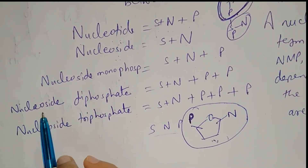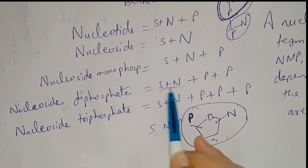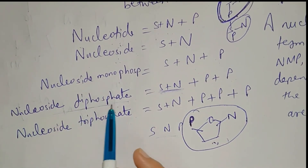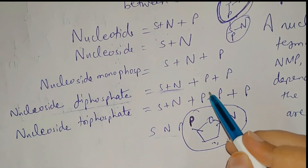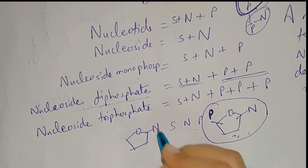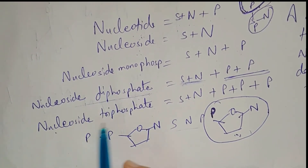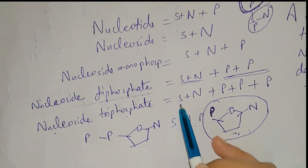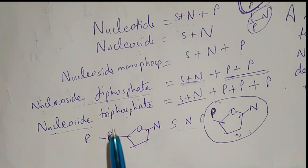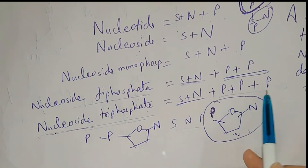The second term is nucleoside diphosphate: nucleoside means SN, and diphosphate means two phosphate molecules. So a nucleotide with two phosphates is called nucleoside diphosphate — sugar, nitrogenous base, and two phosphate groups. The third term is nucleoside triphosphate: triphosphate means three phosphate molecules. So a nucleotide with three phosphates is called nucleoside triphosphate.